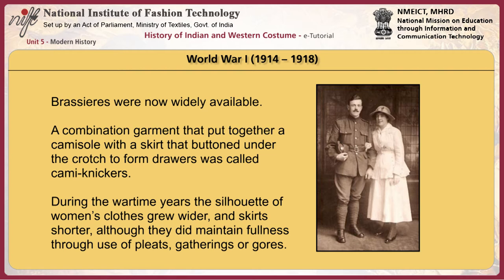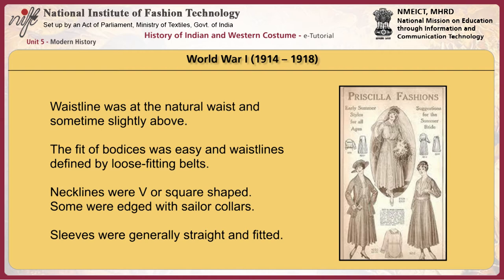During the First World War, brassieres were widely available. A combination garment putting together a camisole with a skirt that buttoned under the crotch to form drawers was called cami-knickers. During the wartime years, the silhouette of women's clothes grew wider and skirts shorter, although they maintained fullness through use of pleats, gathers, or gores. The waistline was at the natural waist and sometimes slightly above. The fit of bodices was easy, with waistlines defined by loose-fitting belts. Necklines were V or square shaped, and some were edged with sailor collars. Sleeves were generally straight and fitted.